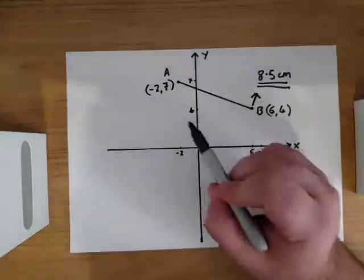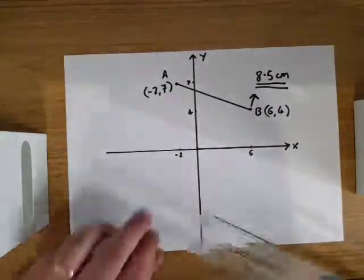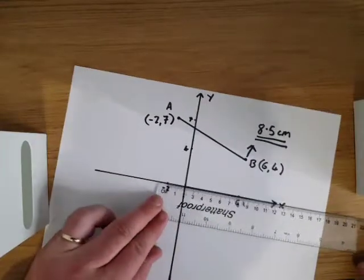So again, we have point A and point B. Point A is (-2, 7) and point B is (6, 4). The scale we've used is 1 centimeter per unit.